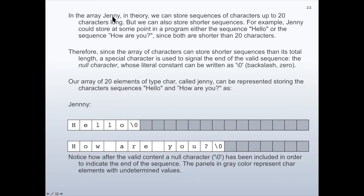In the array Jenny, in theory, we can store sequences of characters up to 20 characters long. But we can also store shorter sequences. For example, Jenny could store at some point in a program either the sequence 'hello' or the sequence 'how are you', since both are shorter than 20 characters. Therefore, since the array of characters can store shorter sequences than its total length, a special character is used to signal the end of the valid sequence. It is the null character, whose literal constant can be written as backslash zero.